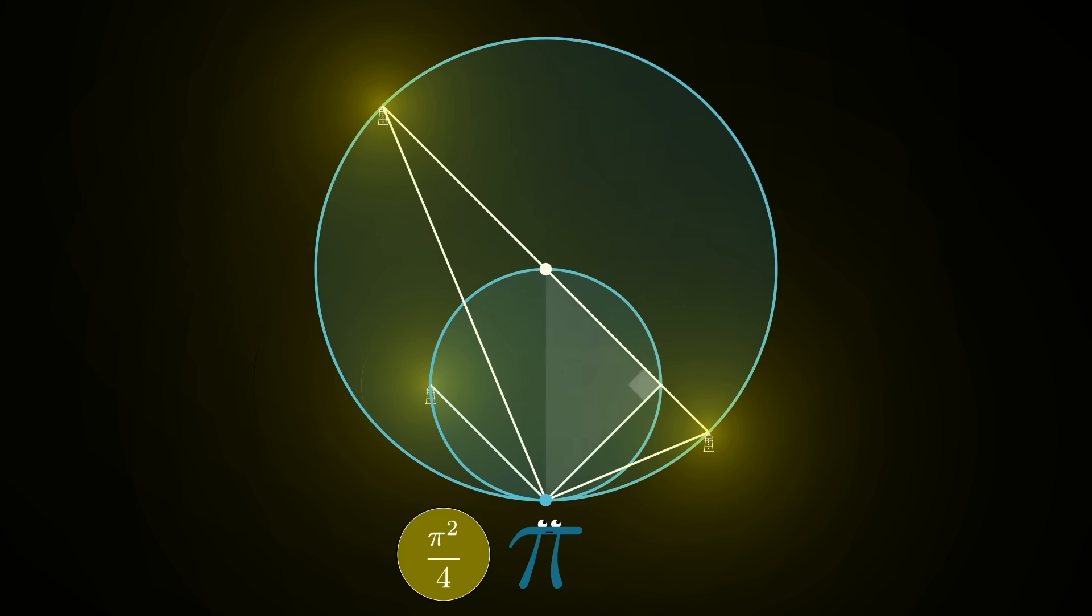Likewise, by looking at this right triangle here whose hypotenuse is the diameter of the smaller circle, you can see that the line from the observer to that original lighthouse is at a right angle with a new long line that we drew.